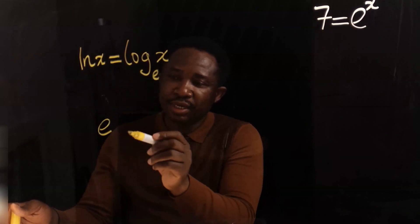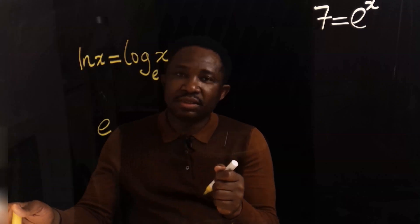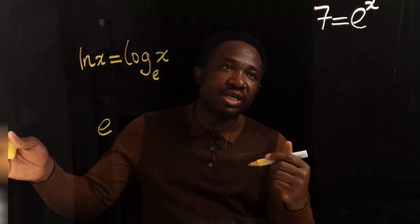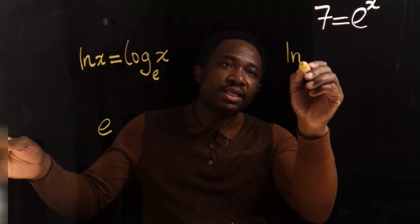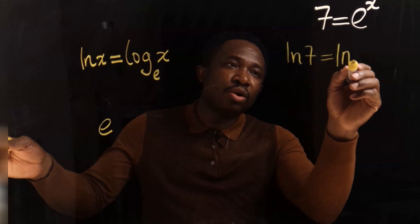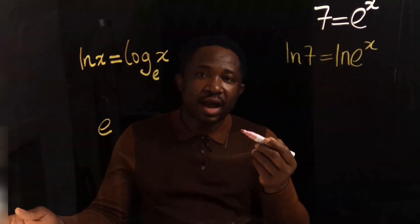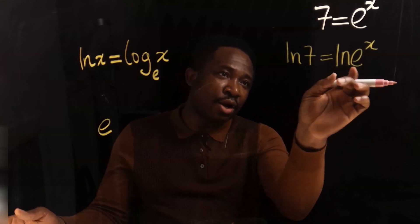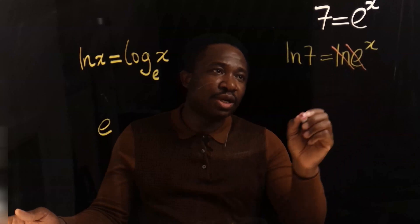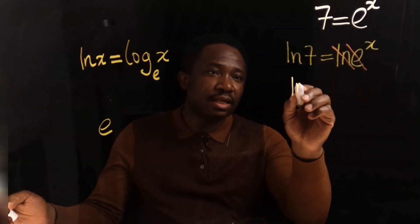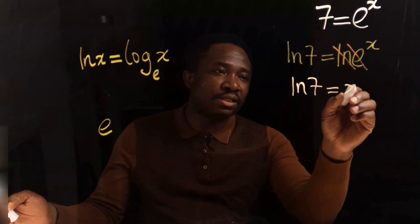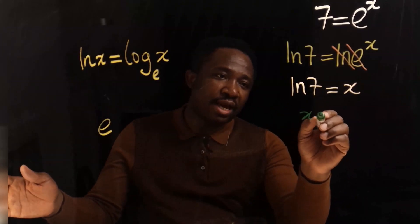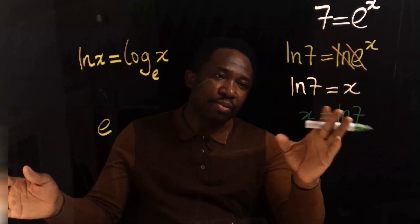Natural log and exponential oppose each other in mathematics. Hence, we're going to take the natural log of both sides. I'm going to take the natural log of 7 and the natural log of exponential x. Because natural log and exponential neutralize each other when close together, natural log cancels out the exponential. Now the natural log of 7 equals x. x is isolated. We can write this as x equals the natural log of 7.